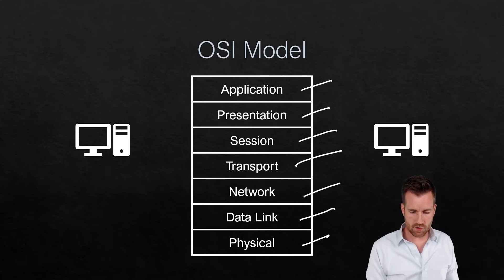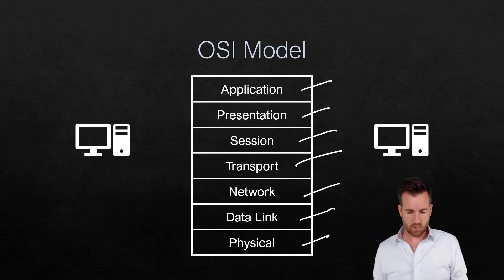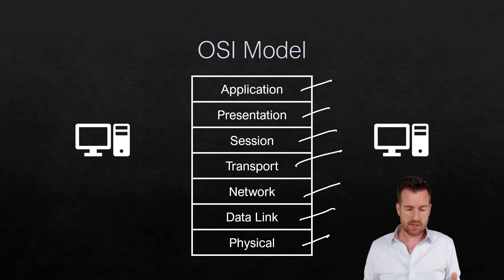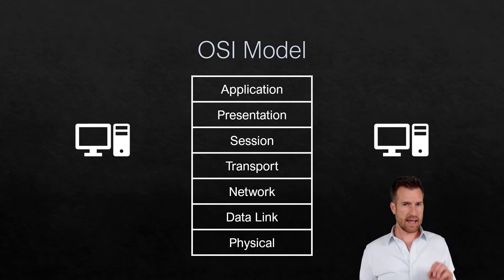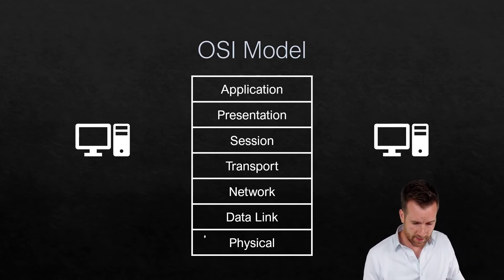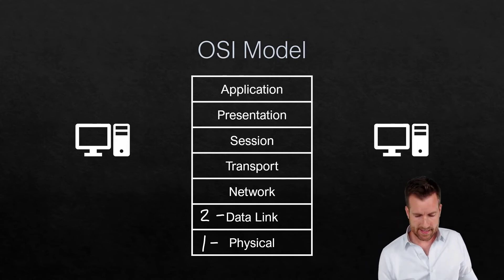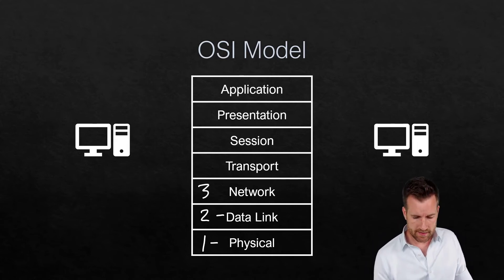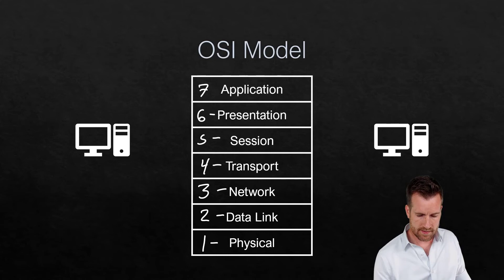You can see the different layers here: Application, Presentation, Session, Transport, Network, Data Link, and Physical — all layers of the OSI model. It's a little unique how these layers are numbered because the first layer is the Physical Layer, the second layer is the Data Link Layer, the third layer is the Network Layer, and so on up through the fourth, fifth, sixth, and seventh layer.